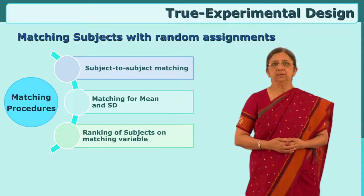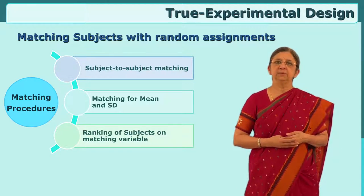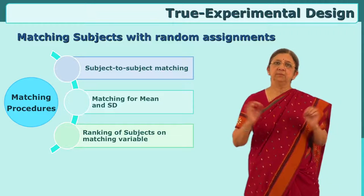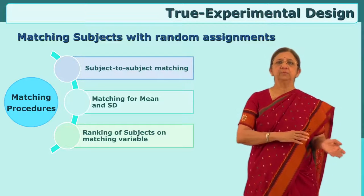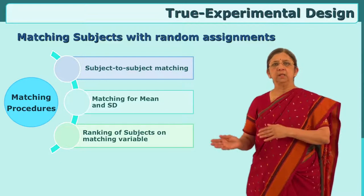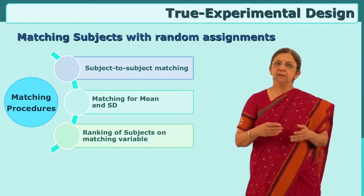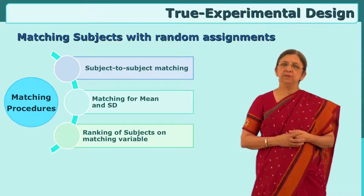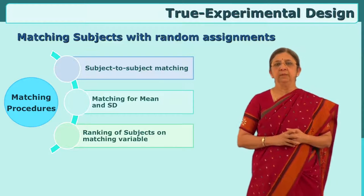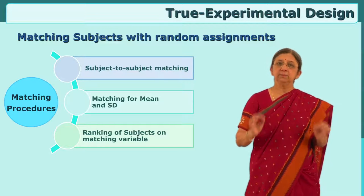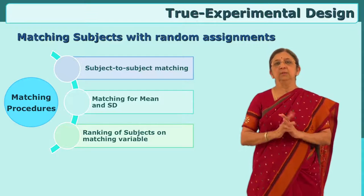Let us revisit how students can be matched in two groups. They can be matched subject by subject — one has 60% marks, the other also has 60% marks. One randomly goes to the experimental group, another randomly goes to the control group. This is called subject-to-subject matching. Not necessarily only by achievement — there are many observed variables on which you want to equate them. This means equating students subject by subject, where one goes to the experimental group and one goes to the control.